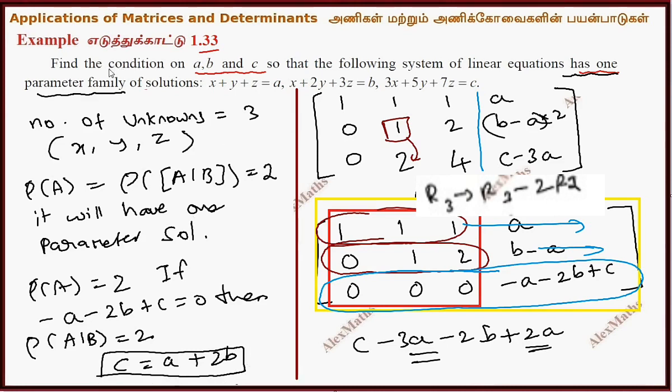The question asks to find the condition on A, B, and C. The condition is c equals a plus 2b.